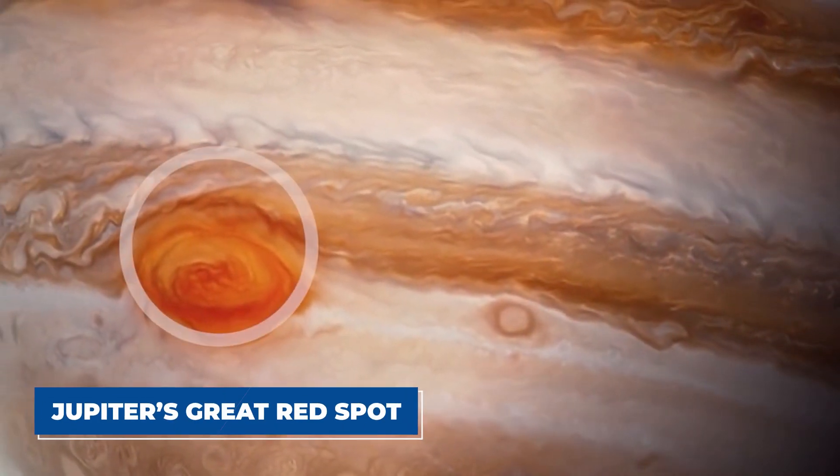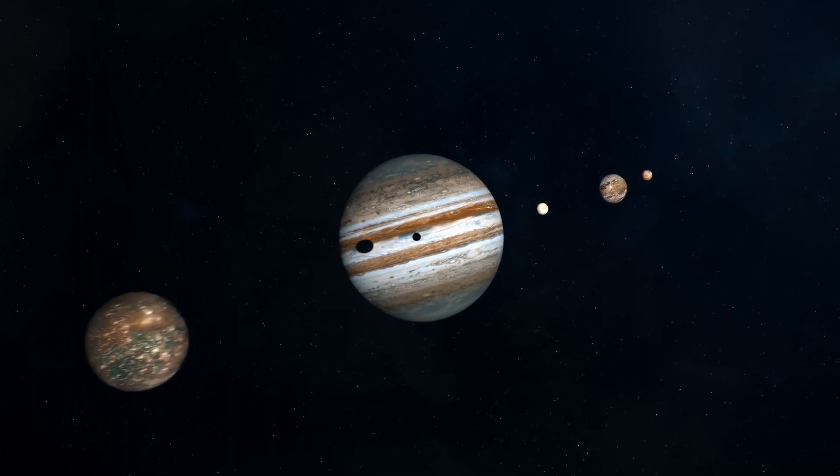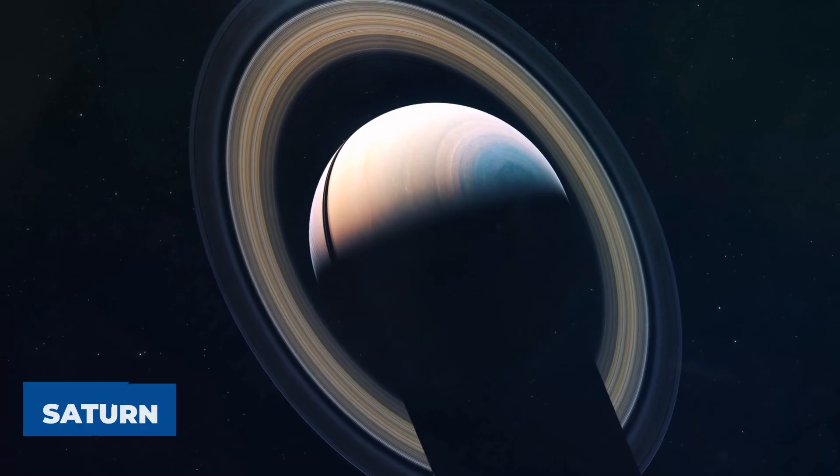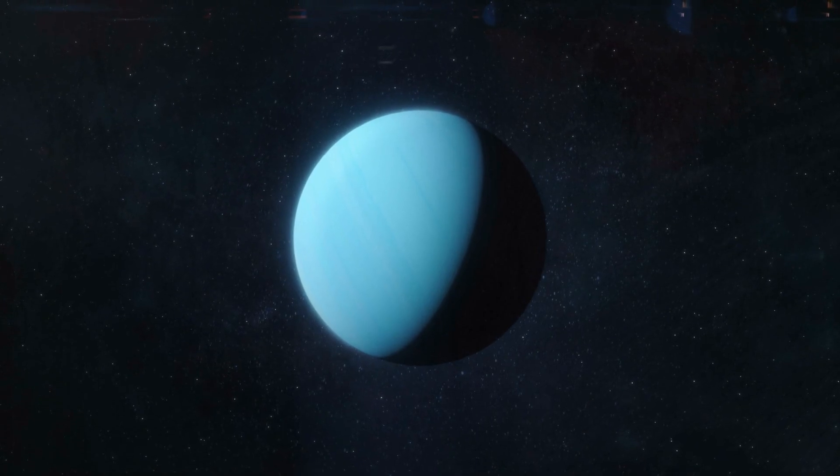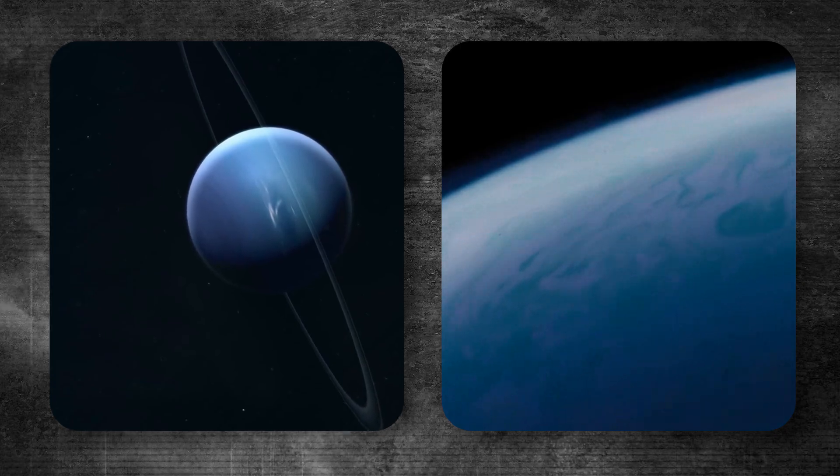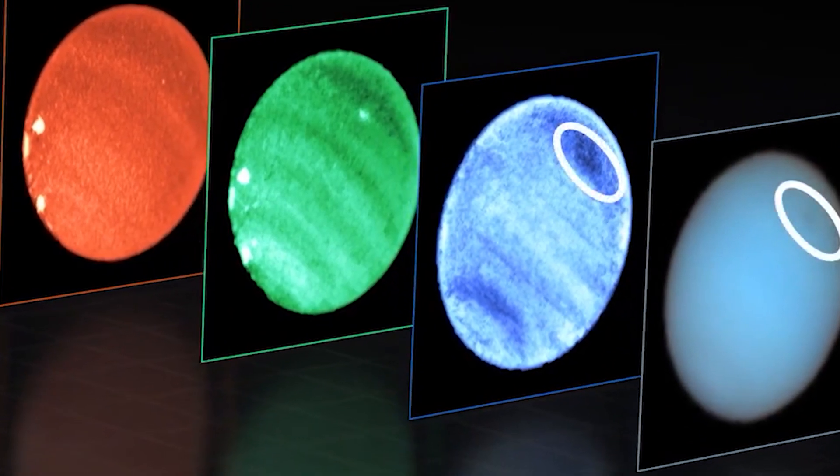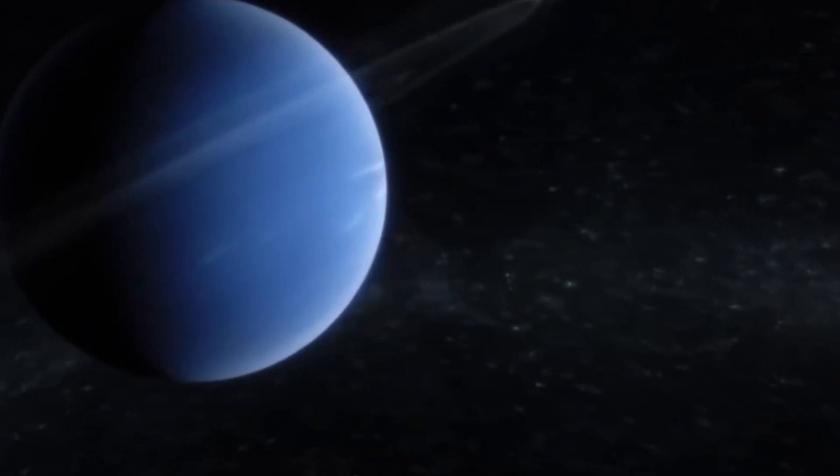For example, Jupiter's great red spot, a giant storm, was shown in incredible detail. The spacecraft captured the movement of its clouds and gave scientists new insights into Jupiter's magnetic field. Saturn, famous for its rings, was also revealed in stunning detail. The Voyagers provided sharp images that showed the structure of its rings, their gaps, and how they interact with Saturn's moons. Uranus's strange tilt and Neptune's intense storms, including its great dark spot, were seen up close for the first time.